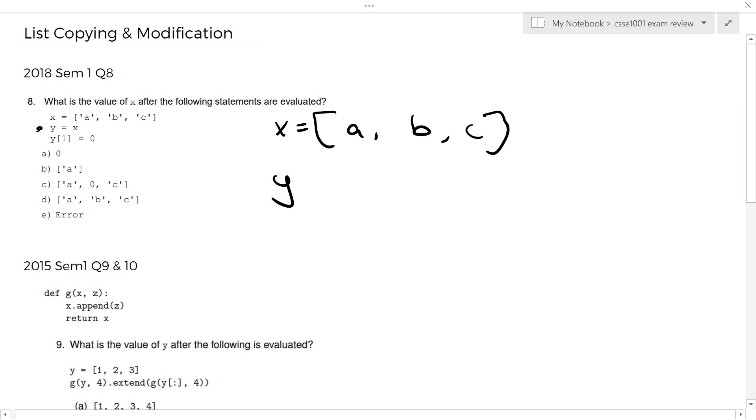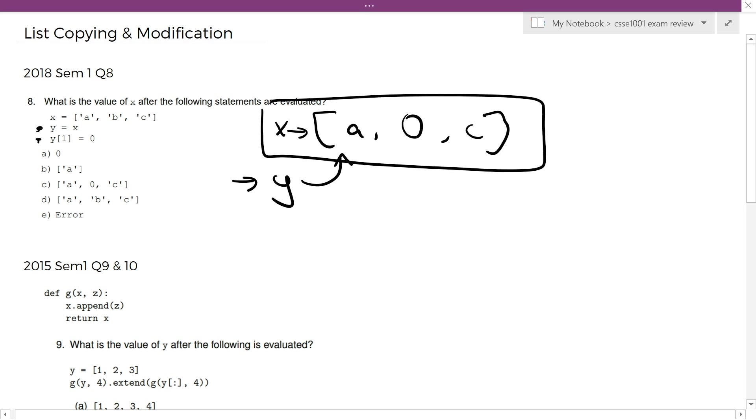What does this line mean, y equals x? Well, realistically, it's just going, y equals this list. Maybe it's more helpful if I put an arrow in there. So, you have one list in memory, and it just happens to be that your variable x and your variable y both point to the same list. So when we go to the third line, and we go, let's change the 1th element of y to a 0, what happens is, we go, well, here's our y, here's our list, and change it to 0. Then it goes, what is the value of x after the statement is evaluated? So, we just print out x, it's a 0, c. Because y just points to the same list as x. If we change y, we change x. If we change x, we change y.